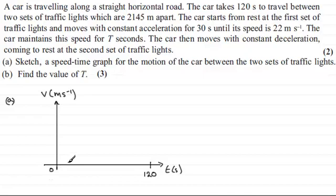Now we're told that the car starts from rest at the first set of traffic lights and moves with constant acceleration for 30 seconds until its speed is 22 meters per second. Well, 30 seconds is a quarter of 120, so we'll put this about there. That's 30, and we'll put up on this axis 22 for 22 meters per second.